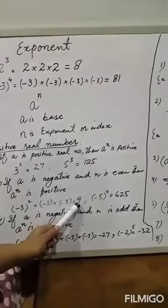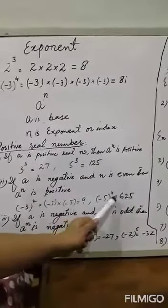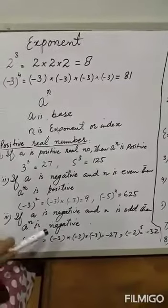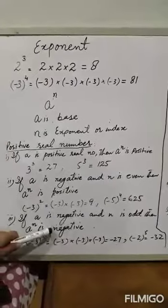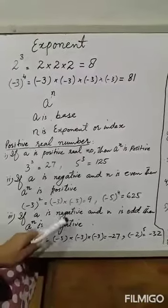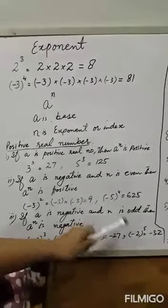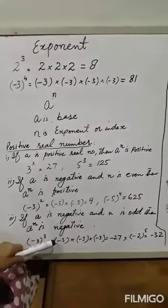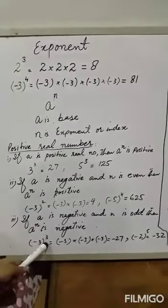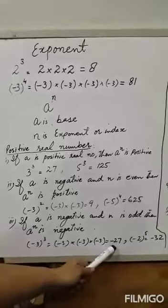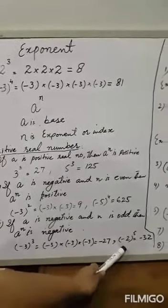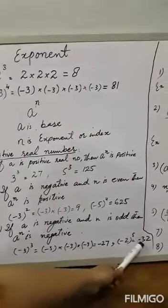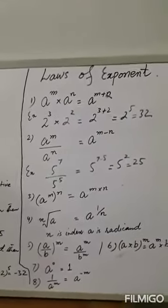If A is negative and N is even (2, 4, 6, 8...), then A raised to the power N is always positive. For example, (minus 3) squared equals minus 3 times minus 3 equals positive 9. Similarly, (minus 5) to the power 4 equals 625. Third condition: if A is negative and N is odd, then A raised to the power N is negative. For example, (minus 3) cubed equals minus 3 times minus 3 times minus 3 equals minus 27. Similarly, (minus 2) to the power 5 equals minus 32.